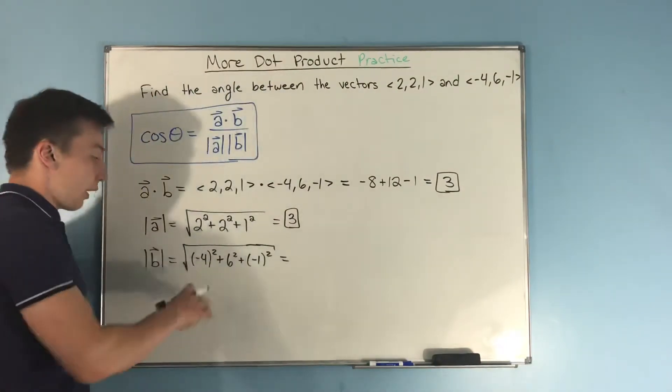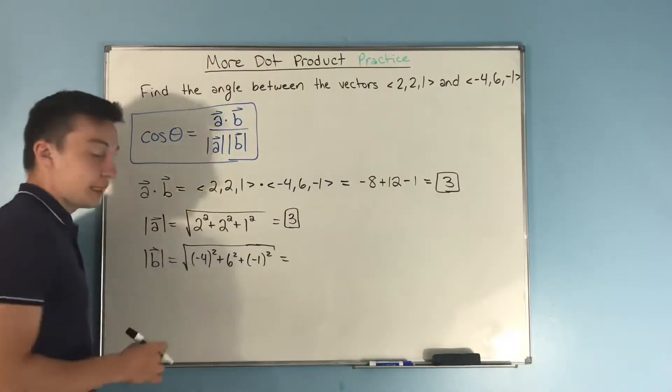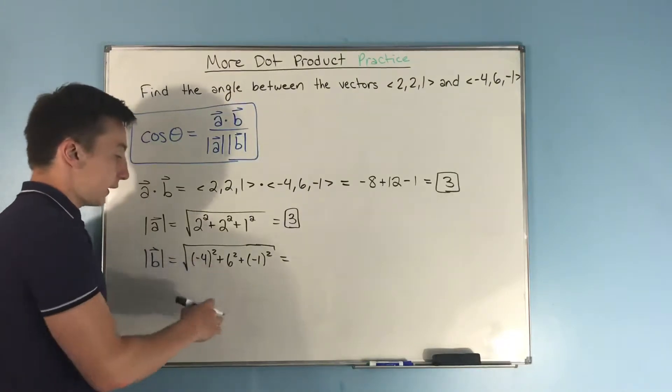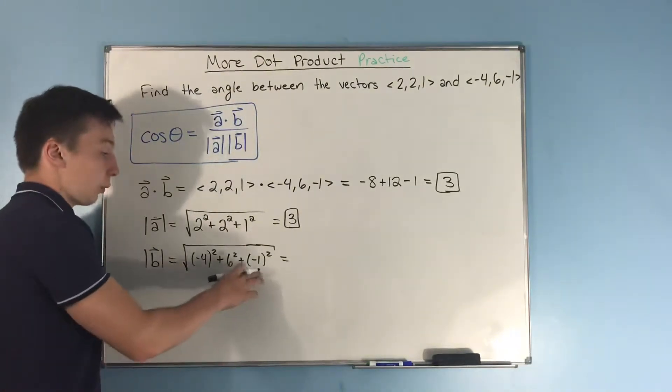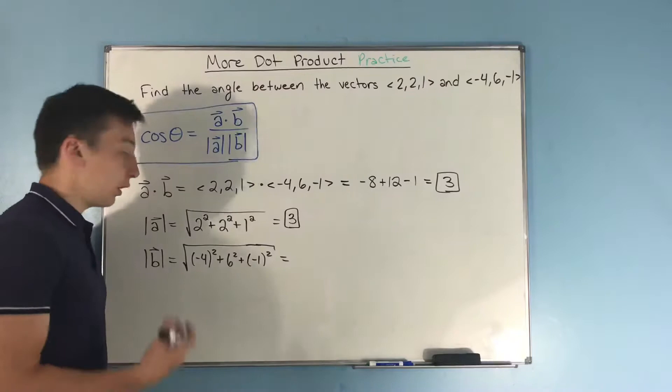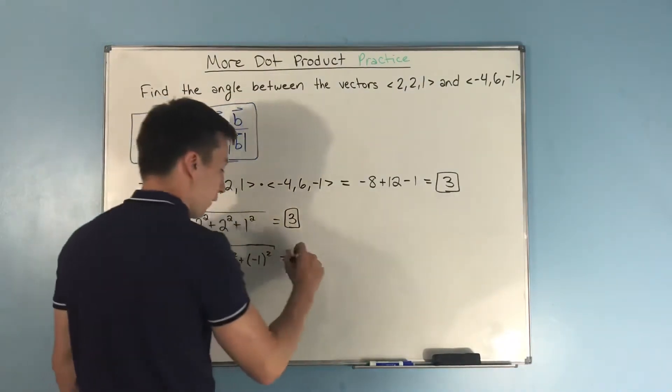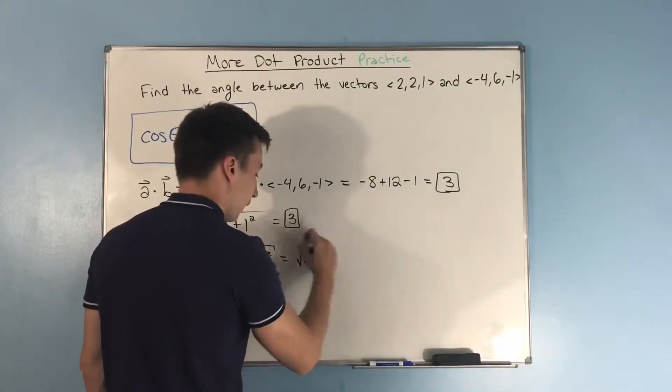So negative 4 squared, that's 16, plus 36, 6 squared. 16 plus 36 is going to be 52, plus negative 1 squared, which is just going to be 1. That gives us 53, so we get rad 53 right here.